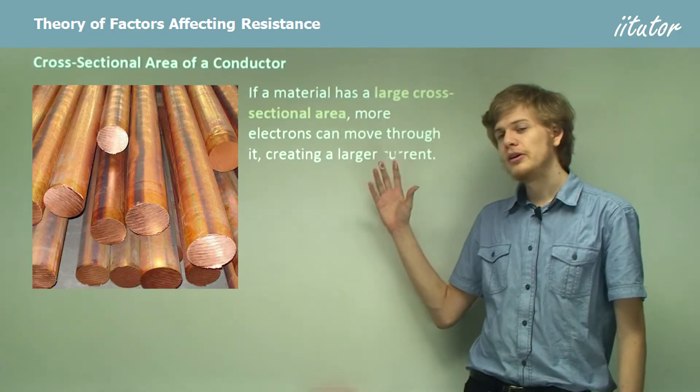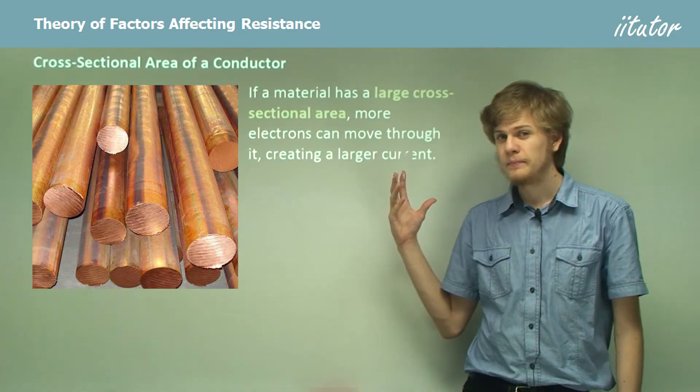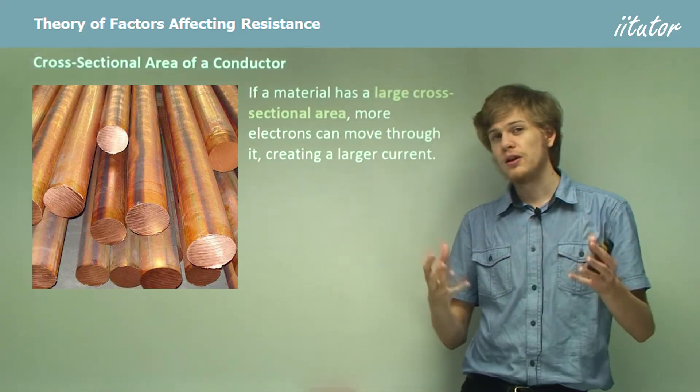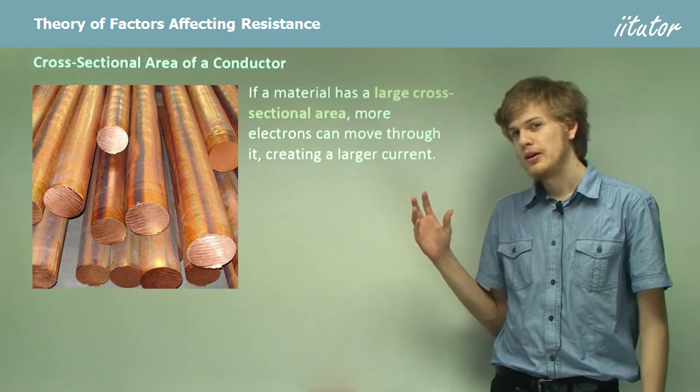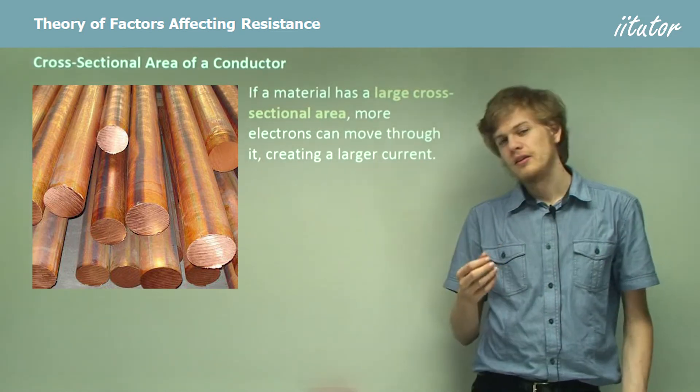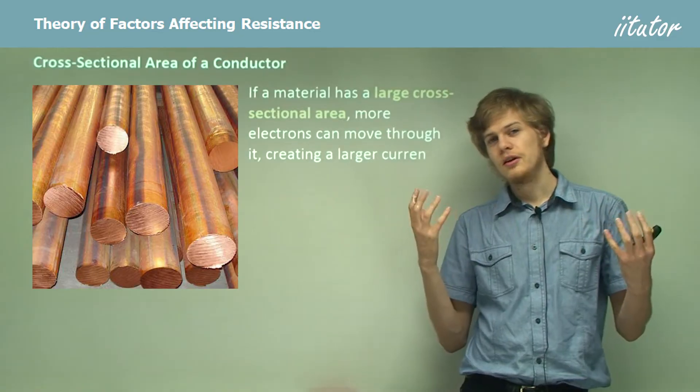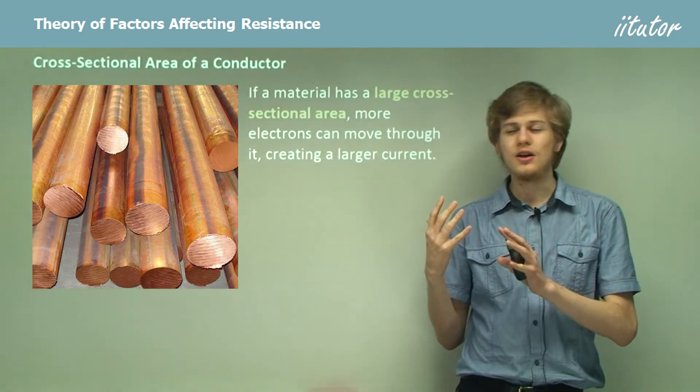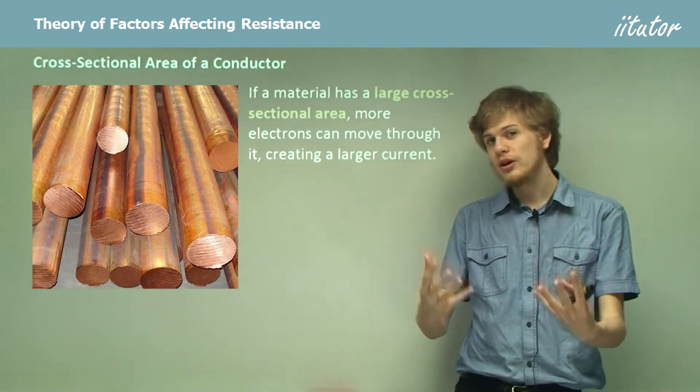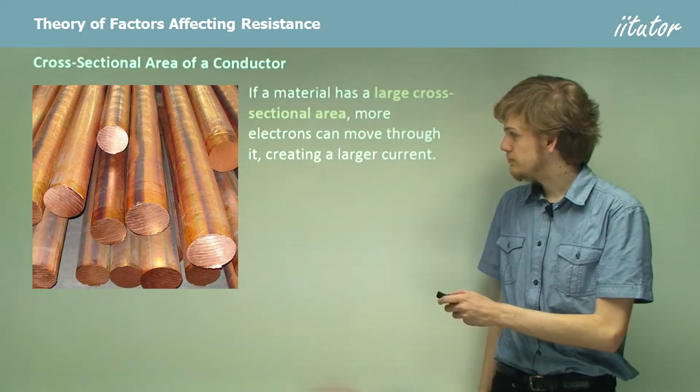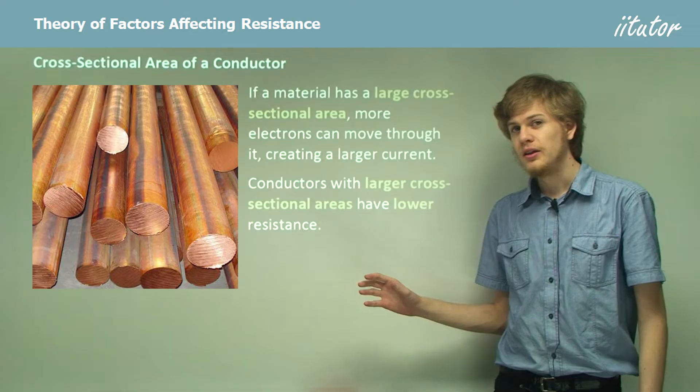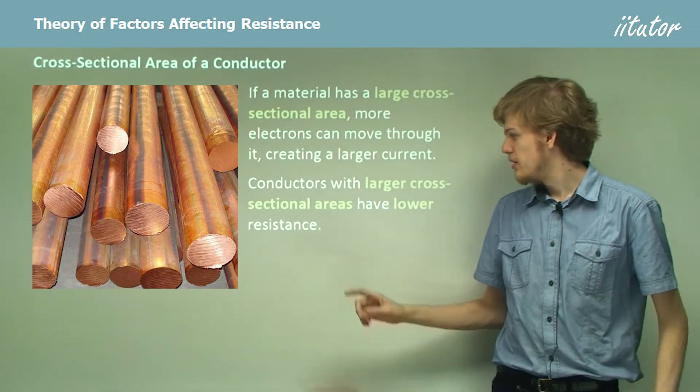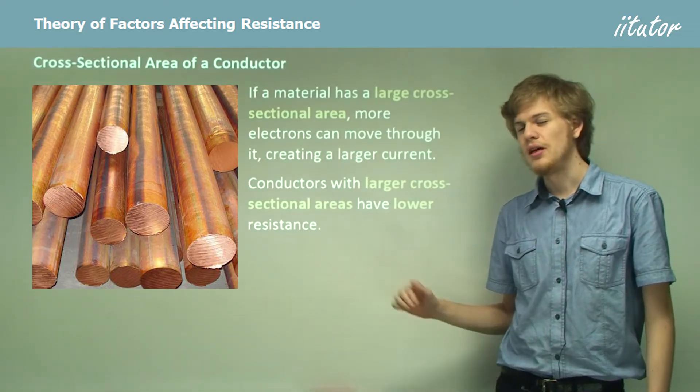Now if a material has a very large cross-sectional area, that is if the wire is a very thick wire, then more electrons can move through it, creating a larger current. The larger the cross-sectional area, the more electrons there are in that cross-sectional area, and so the more can move through the wire. This means conductors with a large cross-sectional area, that means very thick wires, will have a lower resistance than thin wires.